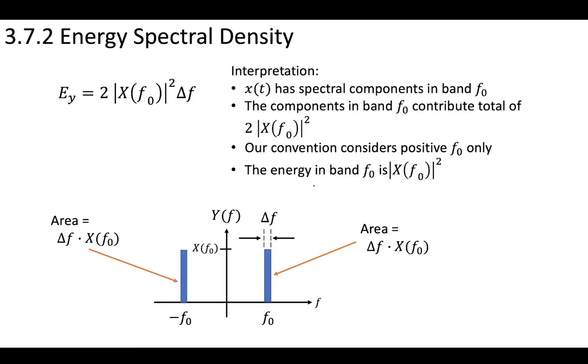Because our convention considers the positive f₀ only, the energy in band f₀ is |X(f₀)|². This means that the energy per band is directly related to the square of the magnitude of the frequency portion of that time domain signal.